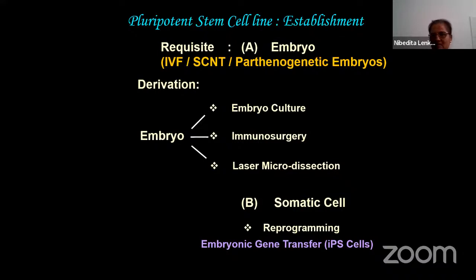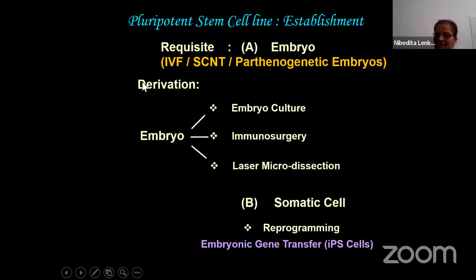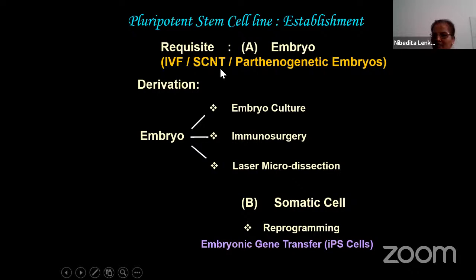If these are the stem cells, how do we obtain them? For embryonic stem cells, the source must be embryos obtained from in vitro fertilization (IVF). Discarded embryos that cannot be implanted into the mother's womb are taken for research. From the blastocyst-stage embryo, you can extract the ICM and generate embryonic stem cells. Other methods include somatic cell nuclear transfer (SCNT) and parthenogenic embryos - the latter is seen in most animals but not in humans.